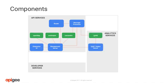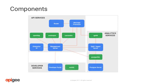Within the analytics services, we have the Cupid server and the Cupid queuing system that transports the analytics data, and the Postgres server and the Postgres SQL database to manage the analytics database. Within the developer services, we have the developer portal and MySQL database mainly used to expose the API documentation, registered external developers, and their apps.